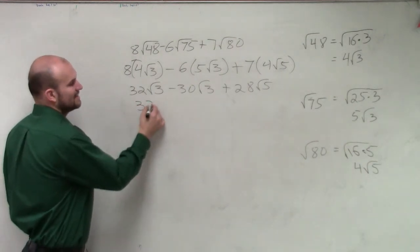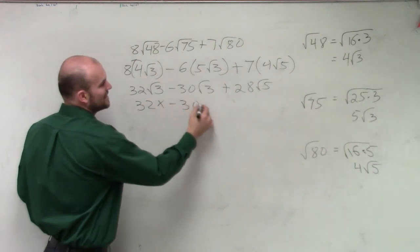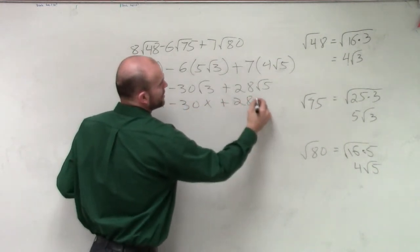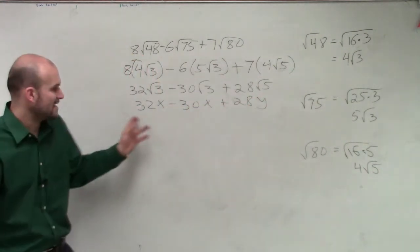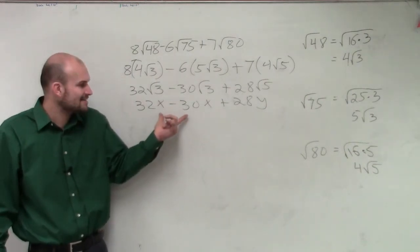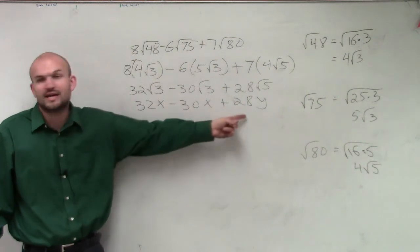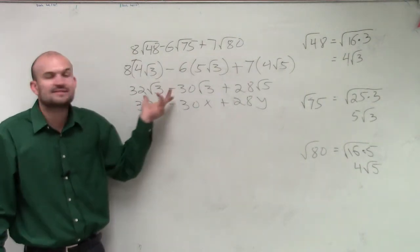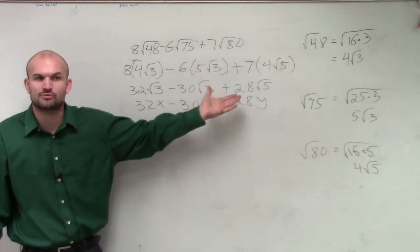So I want you guys to understand, you're going to follow the same operations if I had wrote it like this. If I had wrote this with x's and y's, you guys would know, oh, you can only subtract 32x minus 30x. You can't do anything with the y, right?